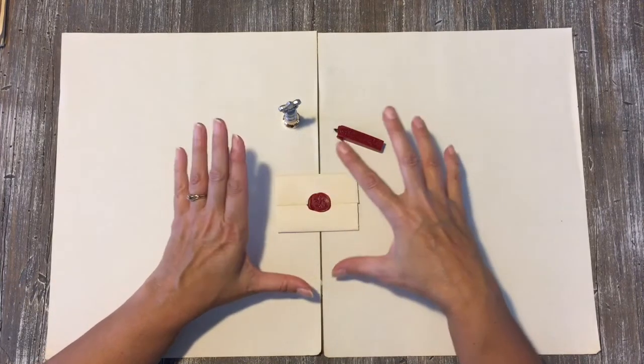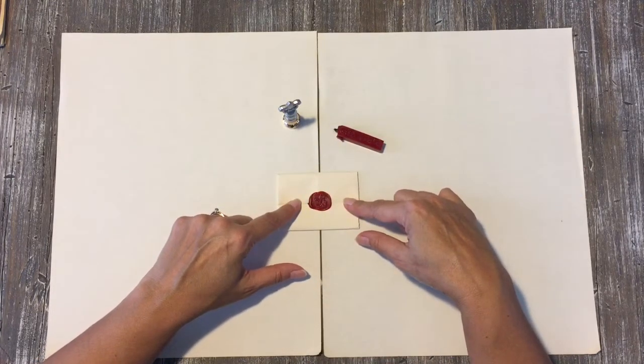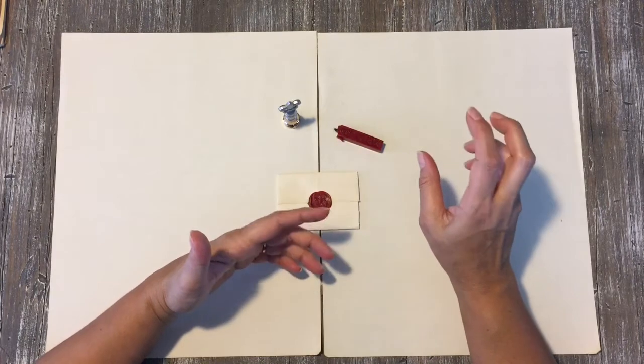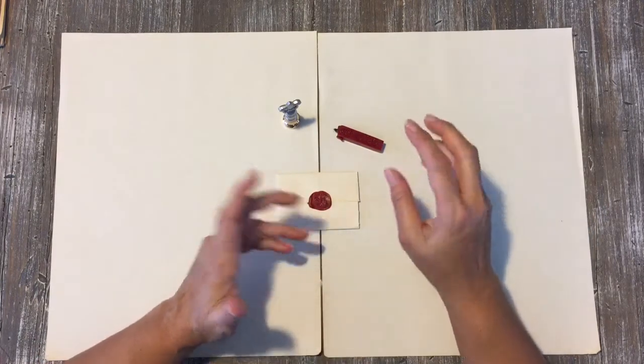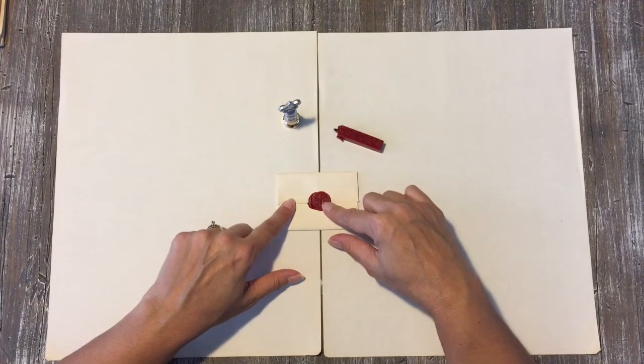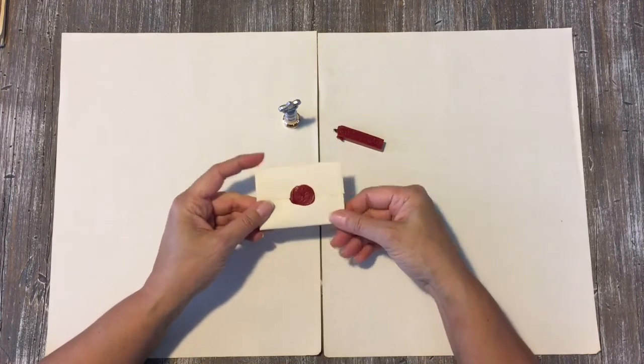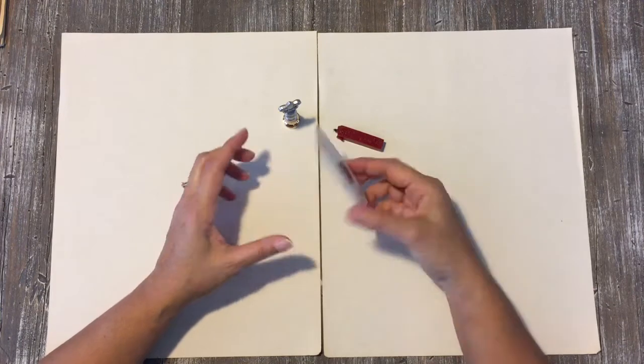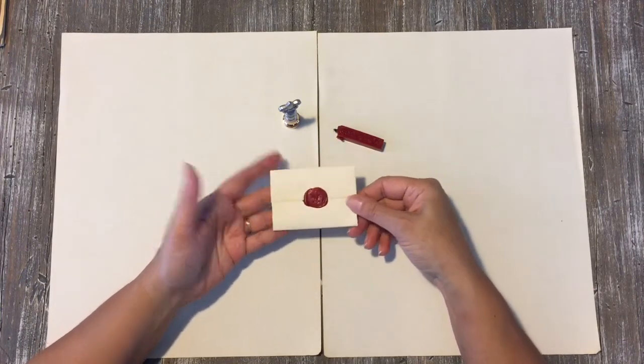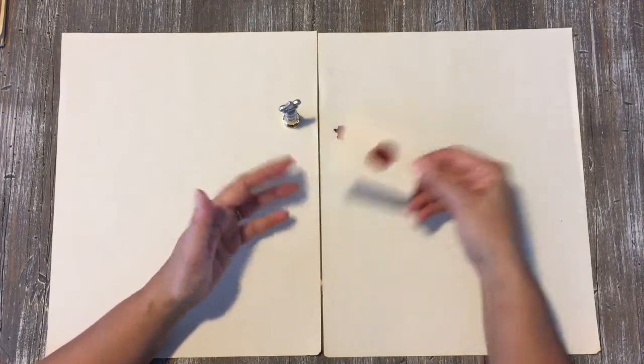So apparently back in that time period, envelopes were not widely used. I guess when you sent something through post, the receiver paid the postage instead of the sender like we do today. And so the postage was based off of the weight of the letter and the distance it was going. So of course if you added an envelope to this, it would be heavier and that would be considered bad manners to have this huge long letter that somebody else is paying for.